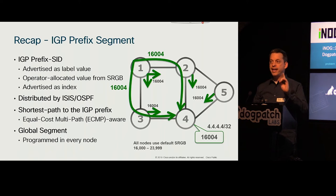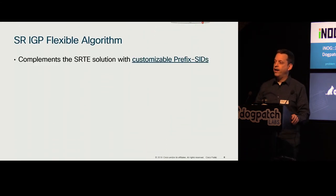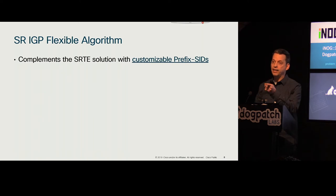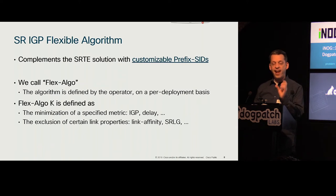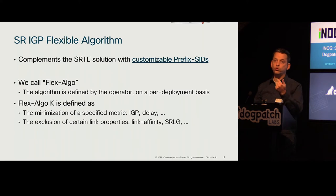That's very powerful, but it can only do one thing: follow the IGP shortest path according to the ISIS or OSPF SPF computation. What we're bringing now with Flexible Algorithm is a customizable prefix SID. You will decide what that prefix SID does — hence the name Flex Algo. We're talking about IGP algorithm variants where ISIS or OSPF computes according to what you told the router to do.